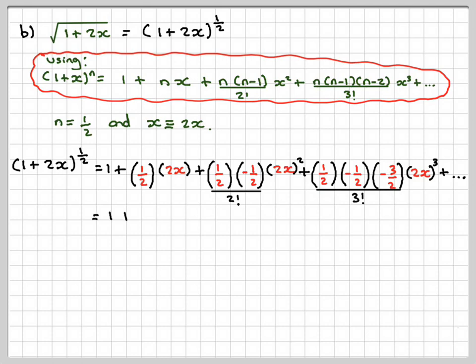So doing this a stage at a time, working this bit, a half times minus a half divided by 2 factorial is minus 1 eighth. 2 squared is 4, so this becomes 4x². And then a half times minus a half times minus 3 over 2 divided by 3 factorial gives me 1 sixteenth. 2 cubed is 8, so we get 8x³.